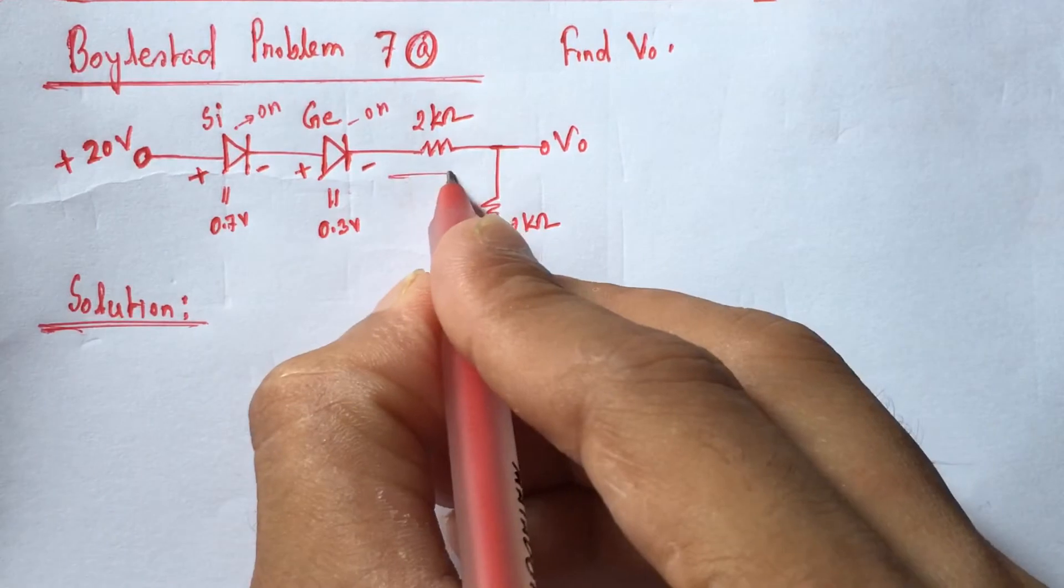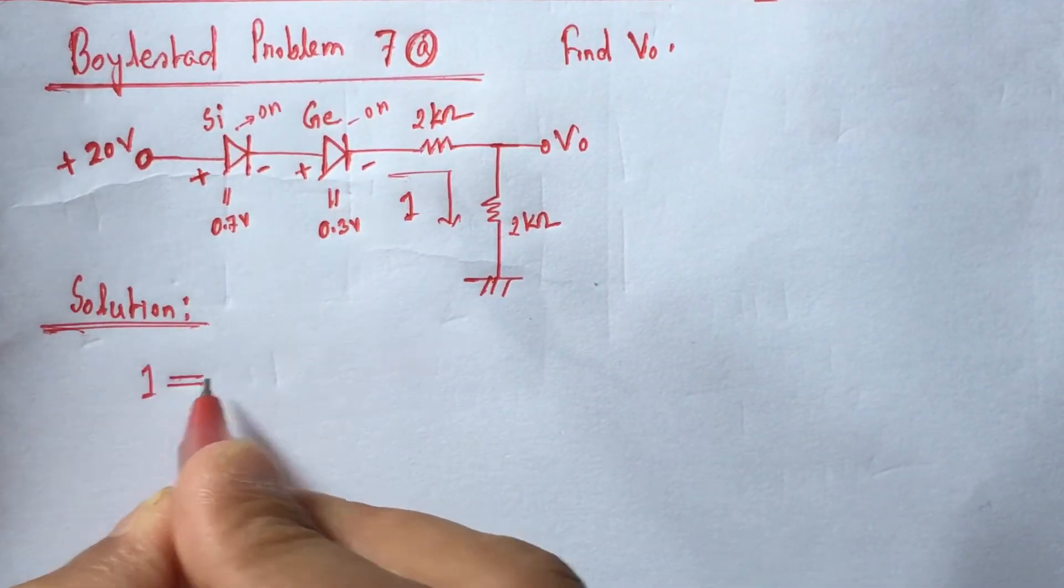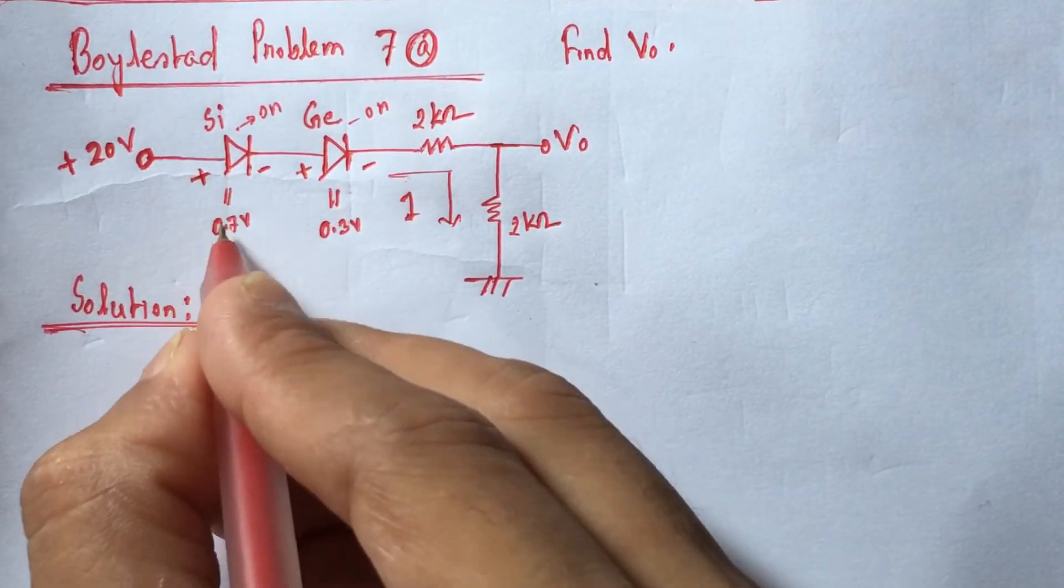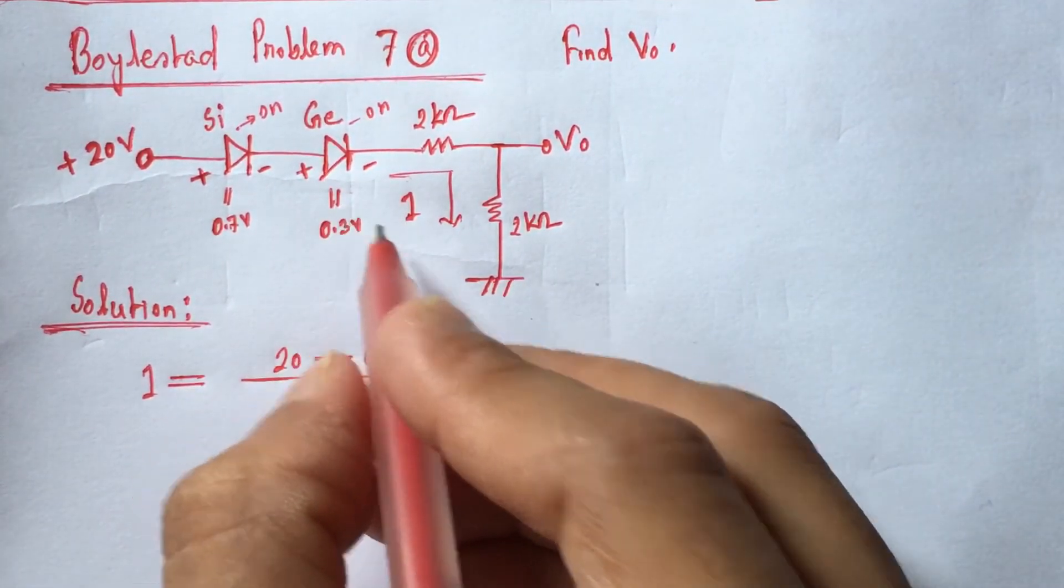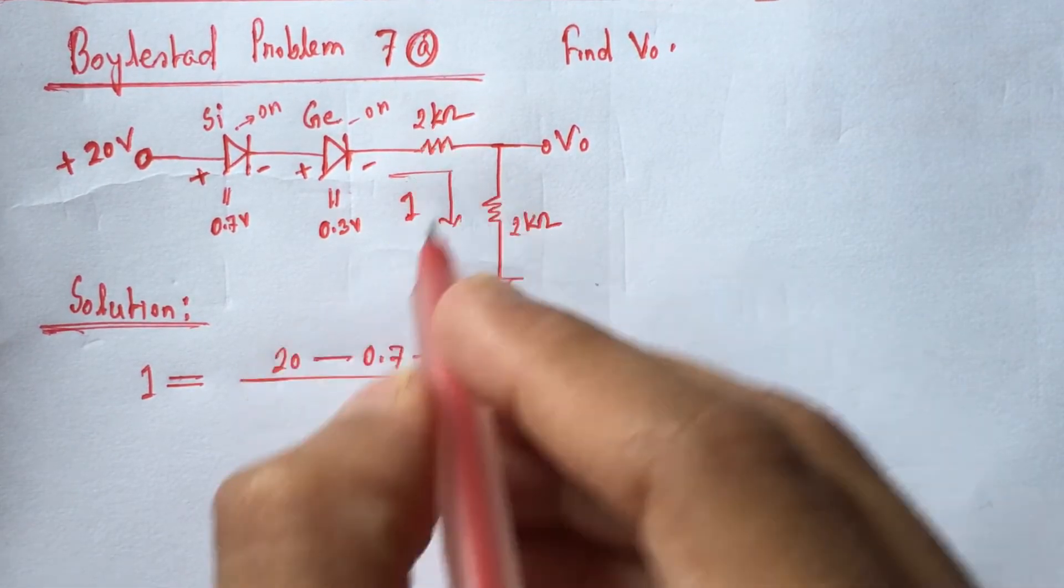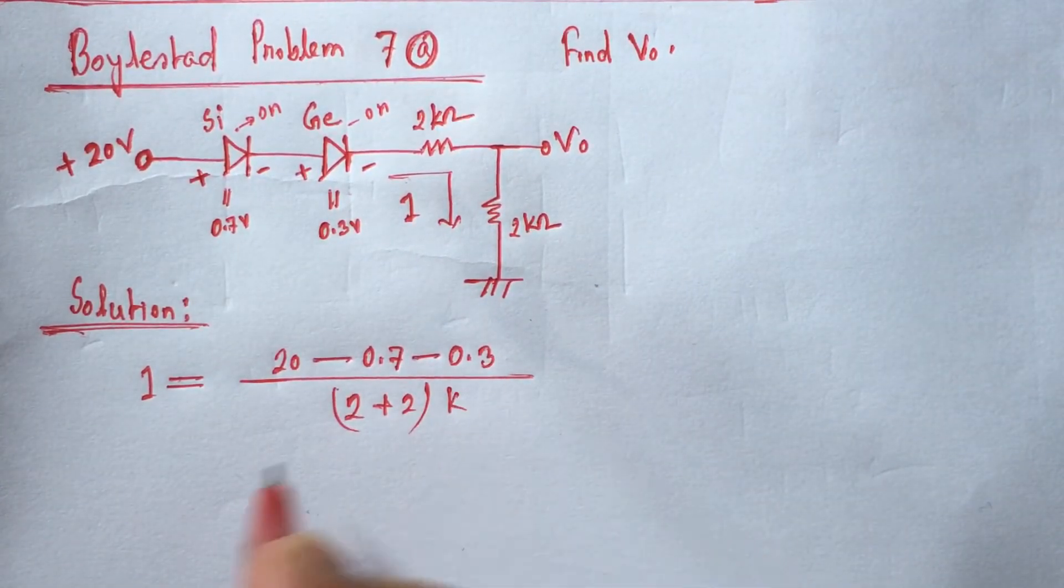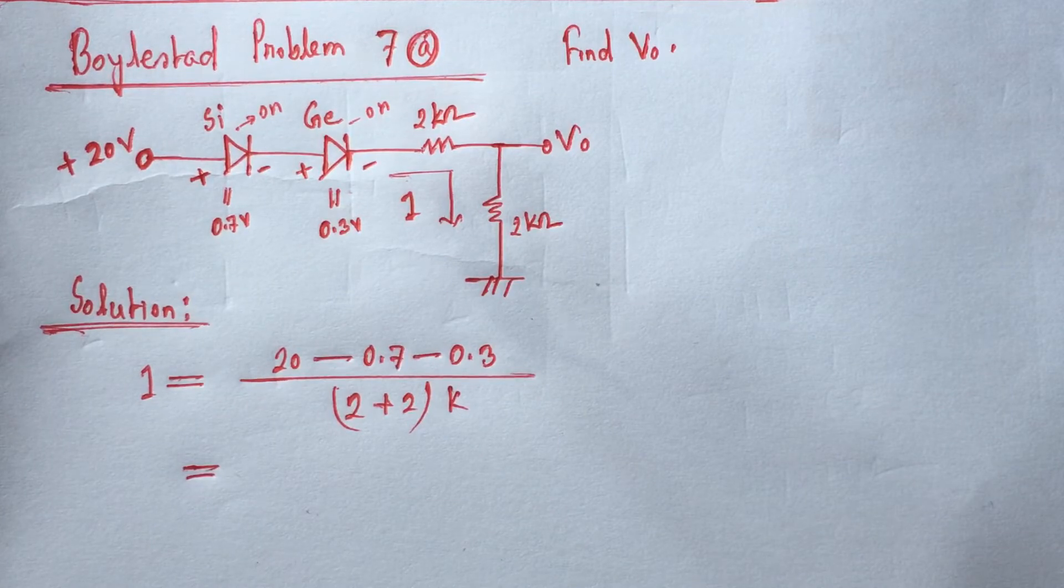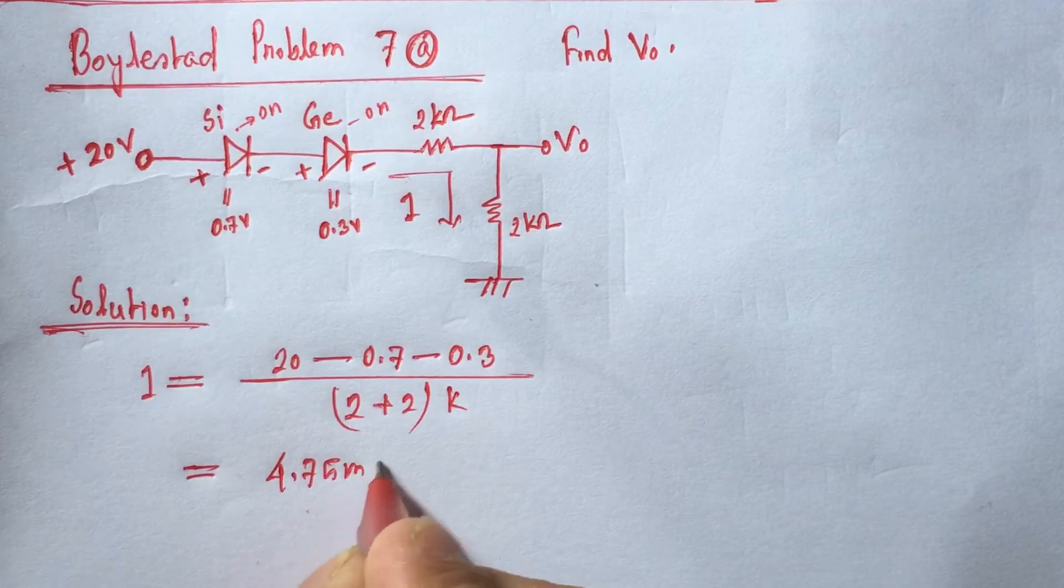Now let the current throughout the circuit be I. We can determine I by: 20 minus 0.7 volts across the silicon diode, minus 0.3 volts for the germanium diode, divided by 2 kilo ohms plus 2 kilo ohms resistance. The value is 4.75 milliamperes.